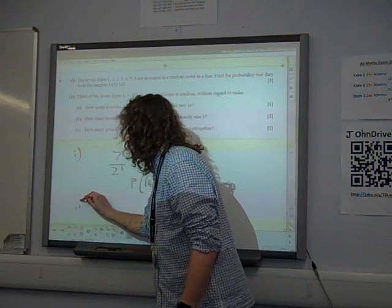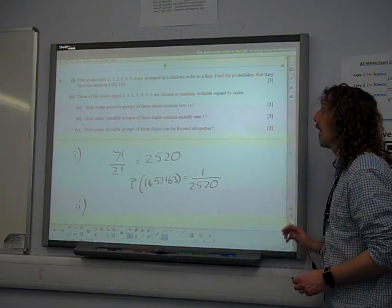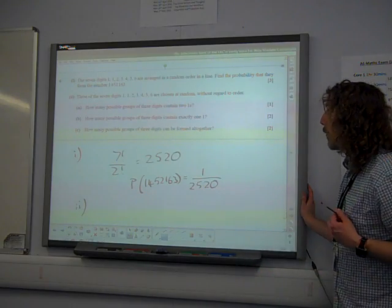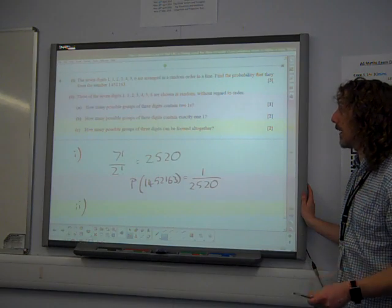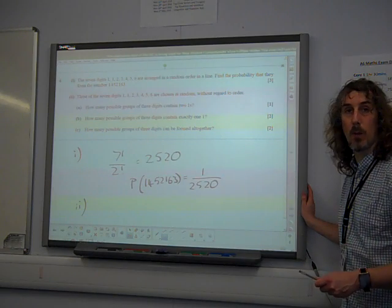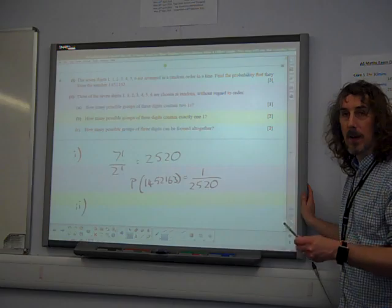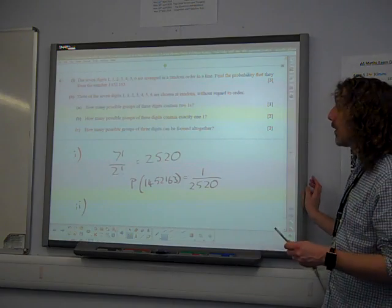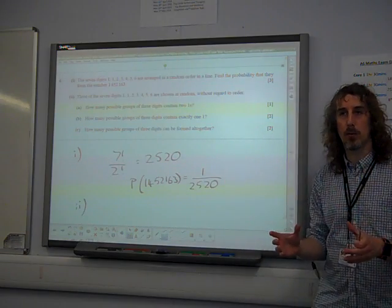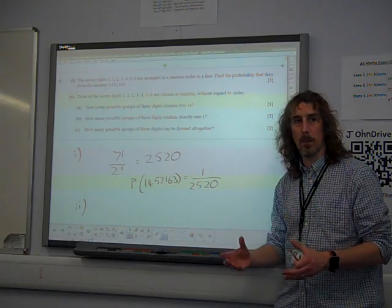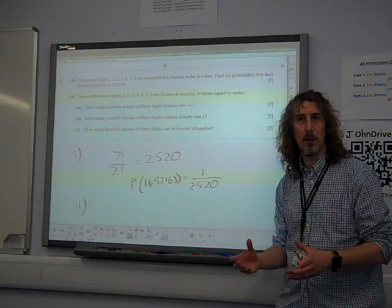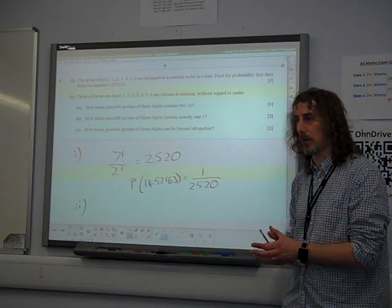You've kind of double counted them being in there, so you get your probability wrong. So that is where you take into account the fact that there are two identical ones. Now it gets more complicated.